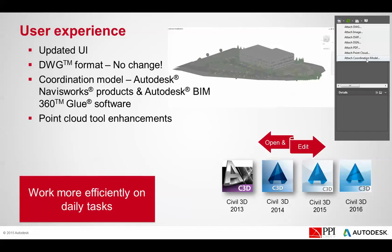One of the things you'll notice in Civil 3D 2016 is there is no change to the AutoCAD drawing format. It used to be that every three years we would get a new drawing format — that is not true this year. From Civil 3D 2013 all the way through Civil 3D 2016, you should have compatibility between your Civil 3D drawing files, meaning upward and backwards compatibility.